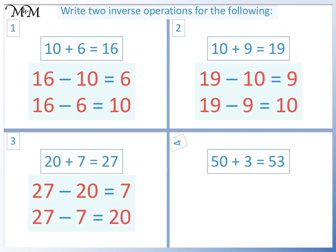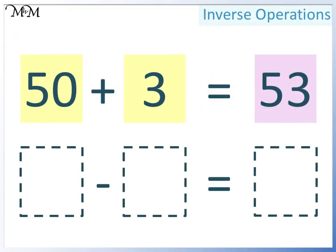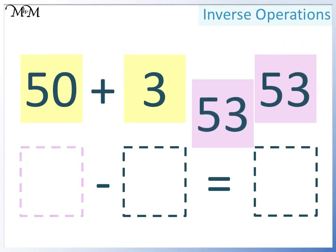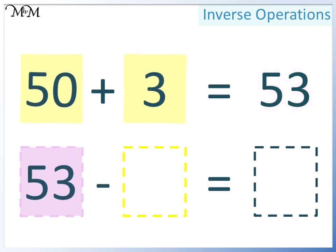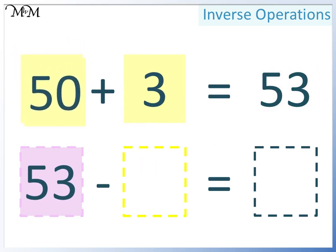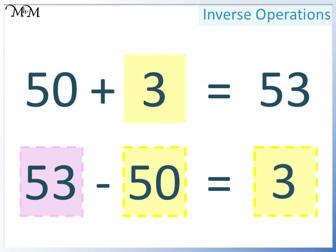Question 4: 50 plus 3 equals 53. The largest number goes at the start. This is 53. It is followed by either of the two smaller numbers. This time, we'll write 50. In the final space, we must write 3. 53 take away 50 equals 3.